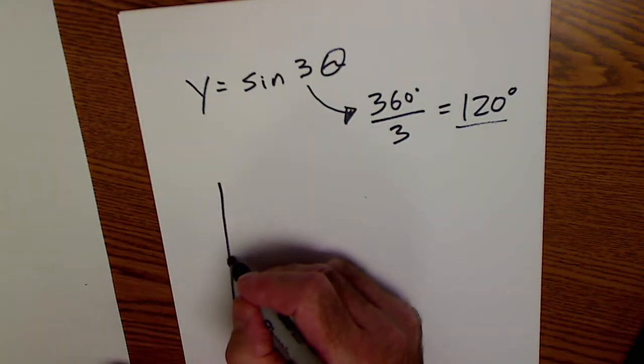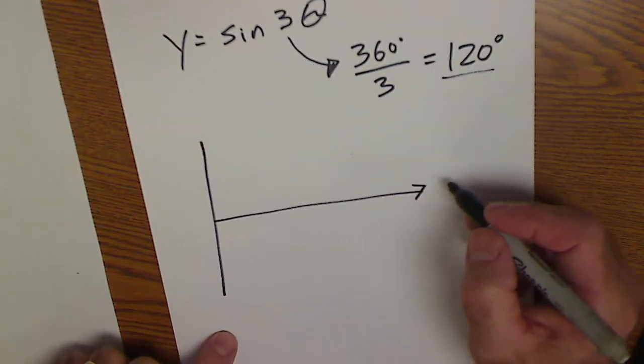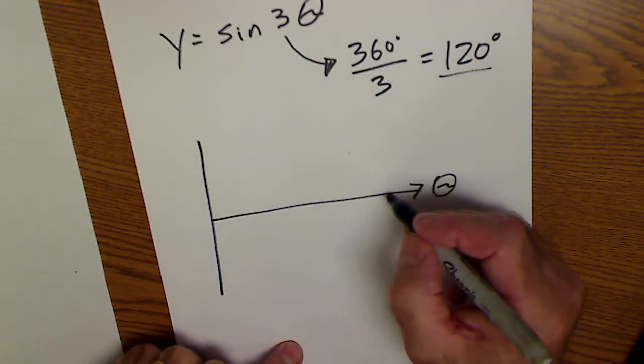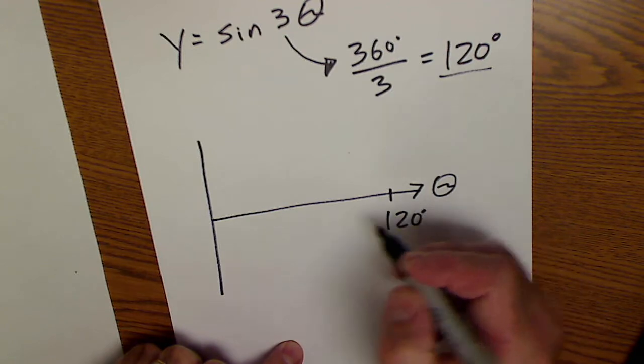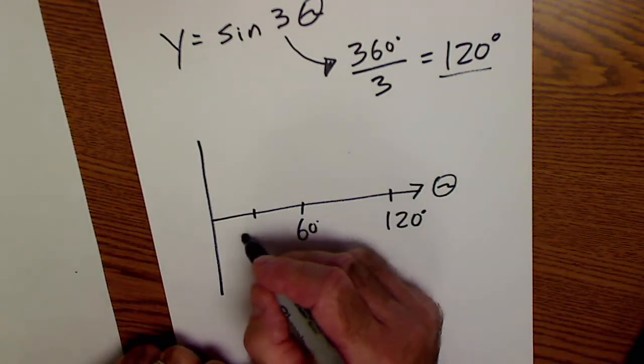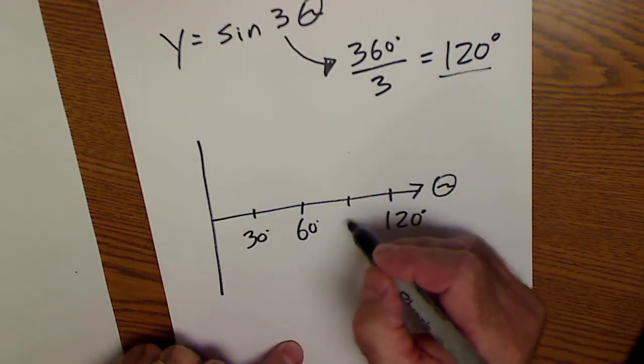So I'm actually going to label my horizontal axis theta before I even start. It'll do a full cycle in 120, half cycle in 60, a quarter cycle in 30, and a quarter cycle in 90.